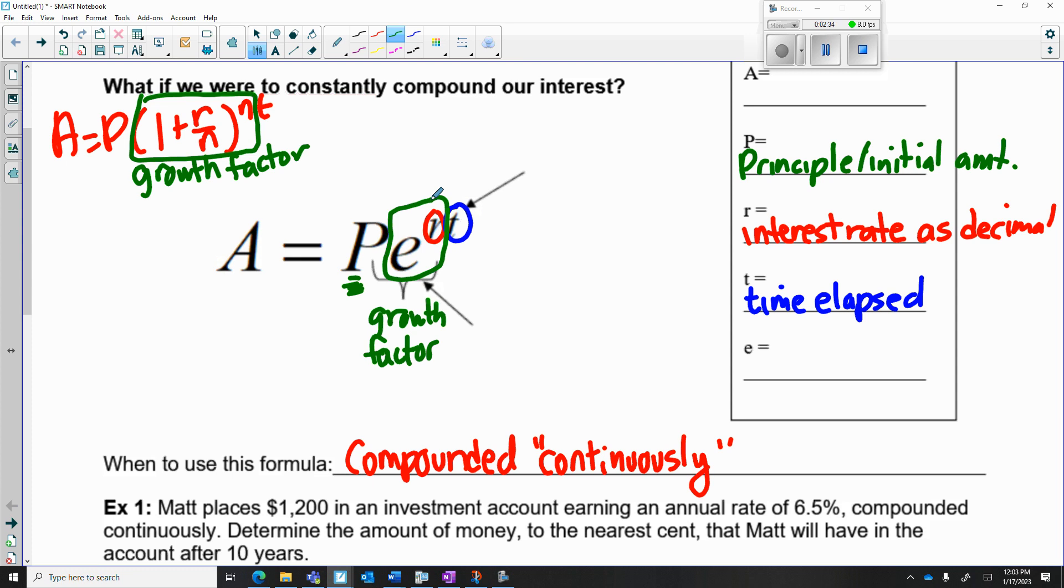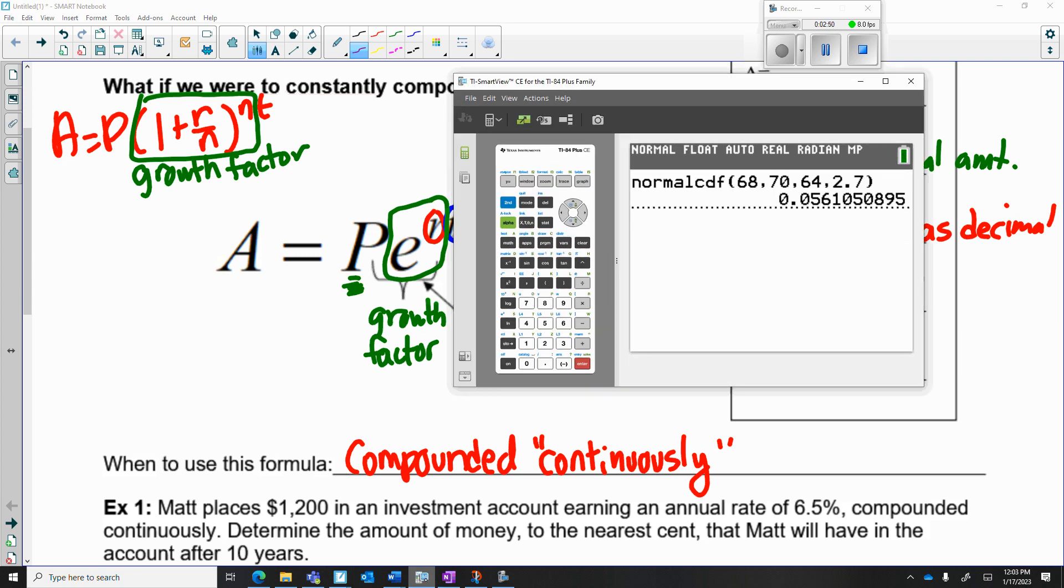And the e, if you guys remember, is the irrational number that is a constant. Remember e is a constant or an irrational number. If you remember, we got that value by pressing second division sign, so it's approximately 2.718.